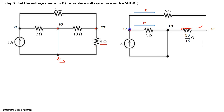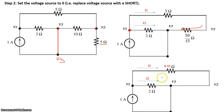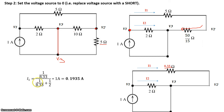I want to use a current divider as the current comes into this node. Since I1 travels toward the 5 ohm and 50/15 ohm resistors, let's combine them: 5 plus 50/15 gives a total of 8.33 ohms. With 1 amp coming in, it divides proportionally between I2 and I1. Using the current divider formula: I1 equals (1/8.33) divided by (1/8.33 plus 1/2) times 1 amp, giving I1 equals 0.1935 amps through the 8.33 ohm branch.